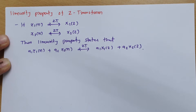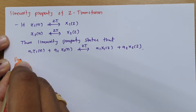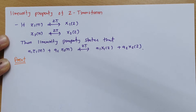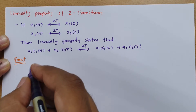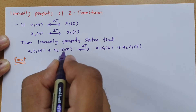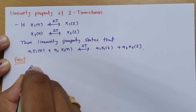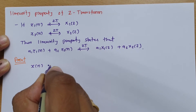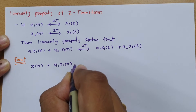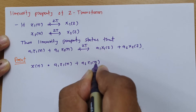Now let us have the proof of this property. For that, let me consider the combined signal as x(n), so x(n) equals a1·x1(n) plus a2·x2(n).